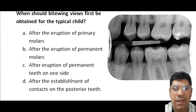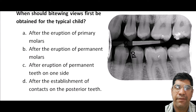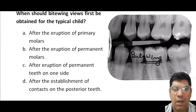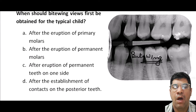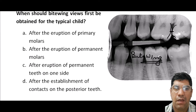When should bite wings first be obtained for a typical child? Bite wings are most commonly used in dentistry to assess the contact points between adjacent teeth and detect cavities. To obtain accurate bite wings, it is necessary to wait until there are stabilized contacts between the posterior teeth.